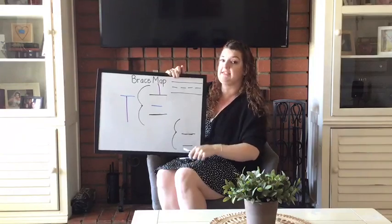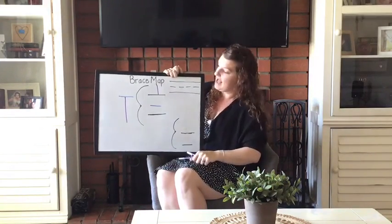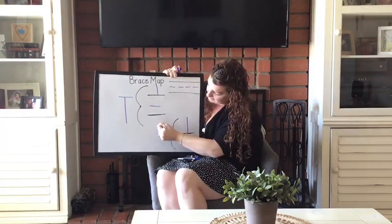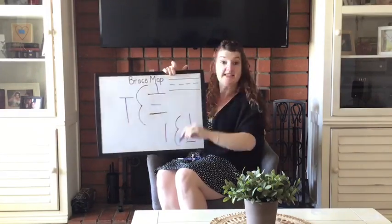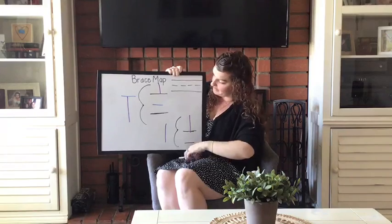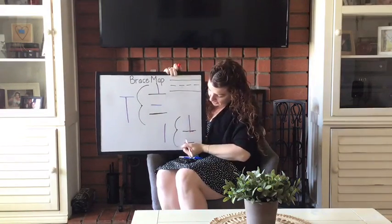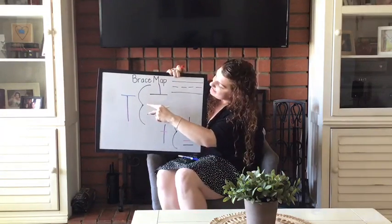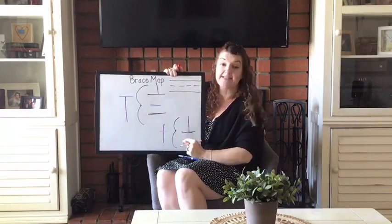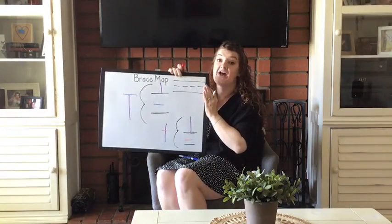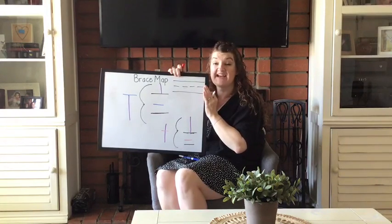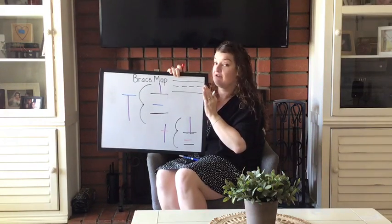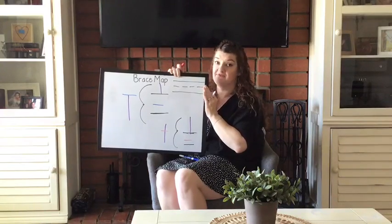My lowercase t also has two parts and you start it the same way. Now this is where the lowercase t is different from the capital T — the lowercase t has a small line across the middle. Both letters have two parts and both letters make that 't' sound, but how they're different is their shape is a little different.